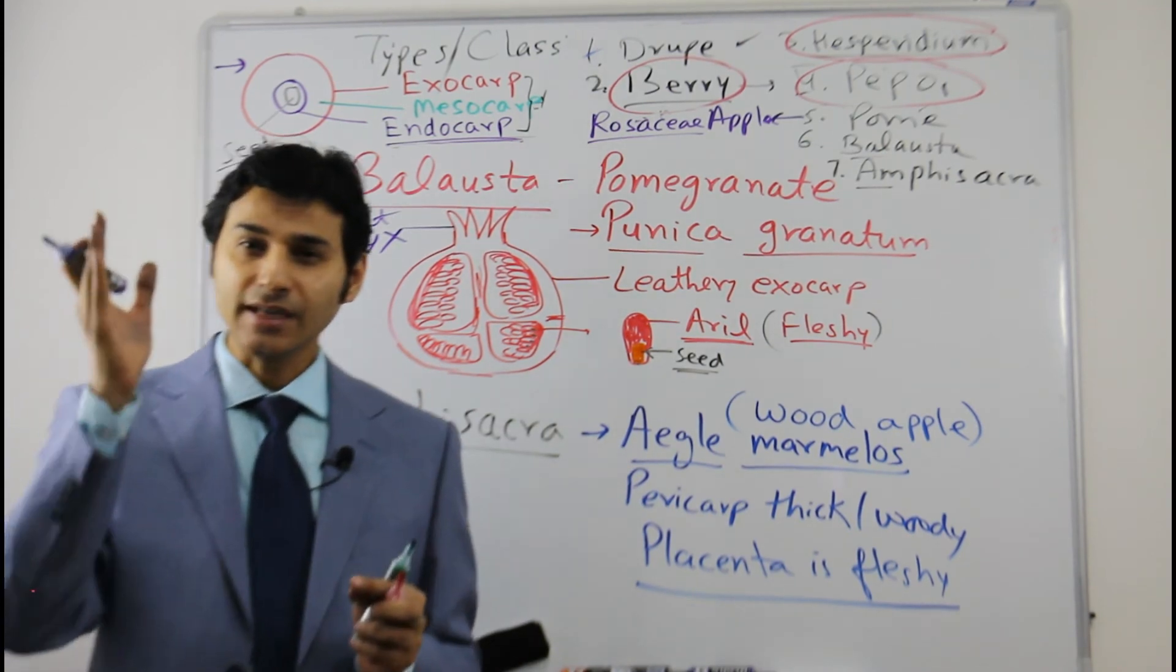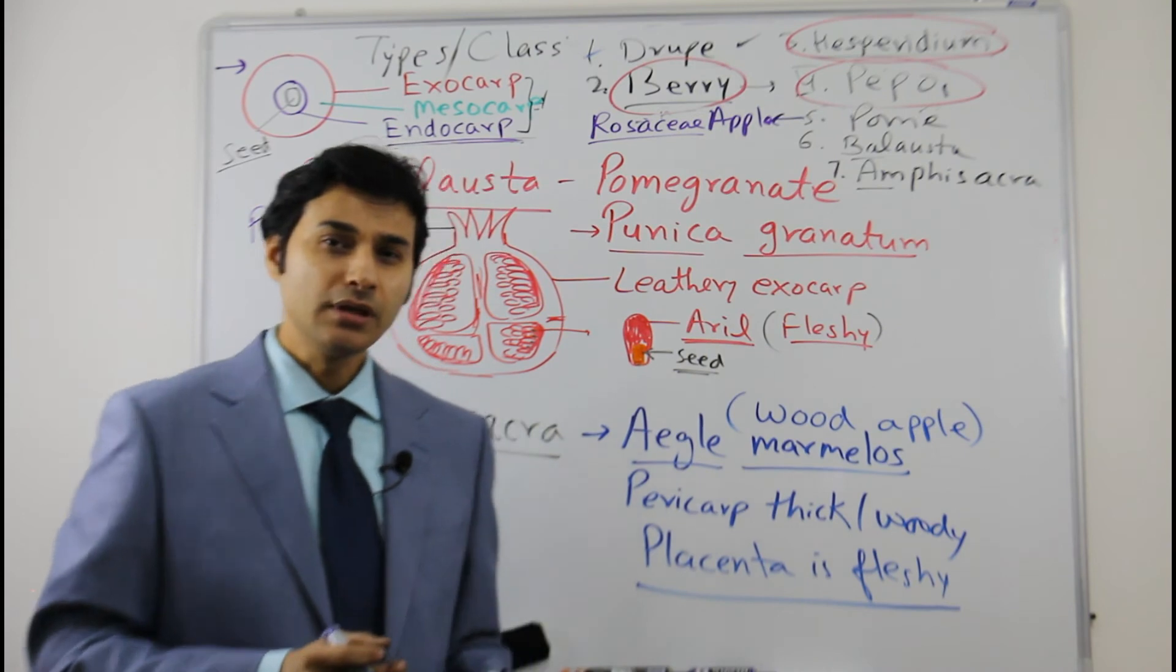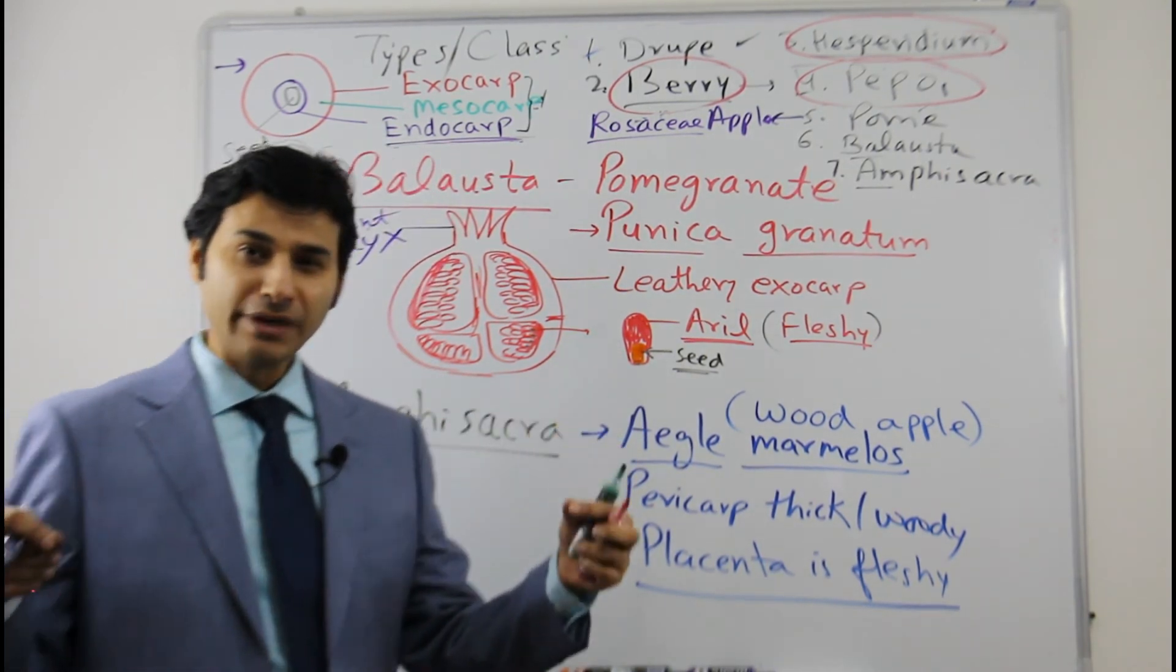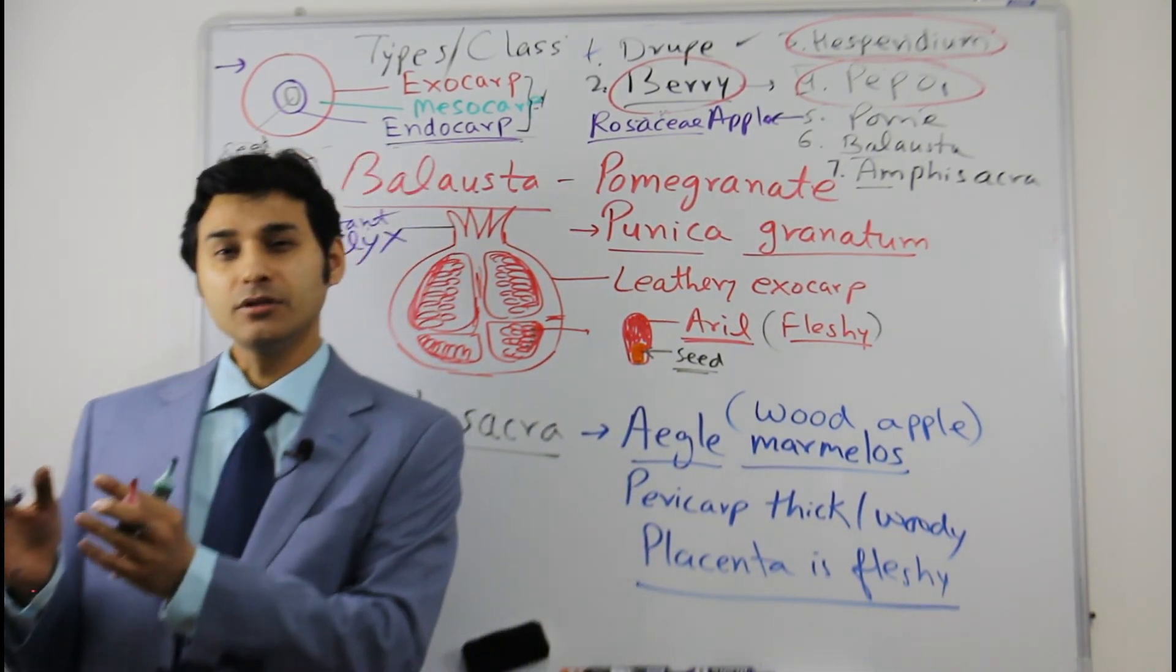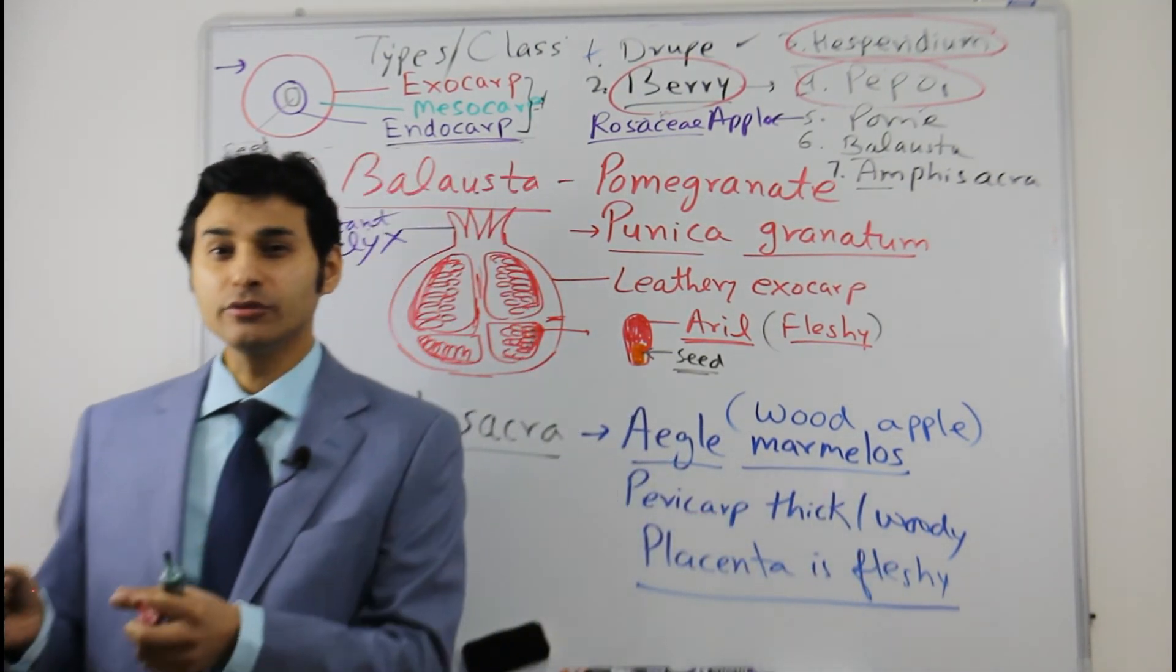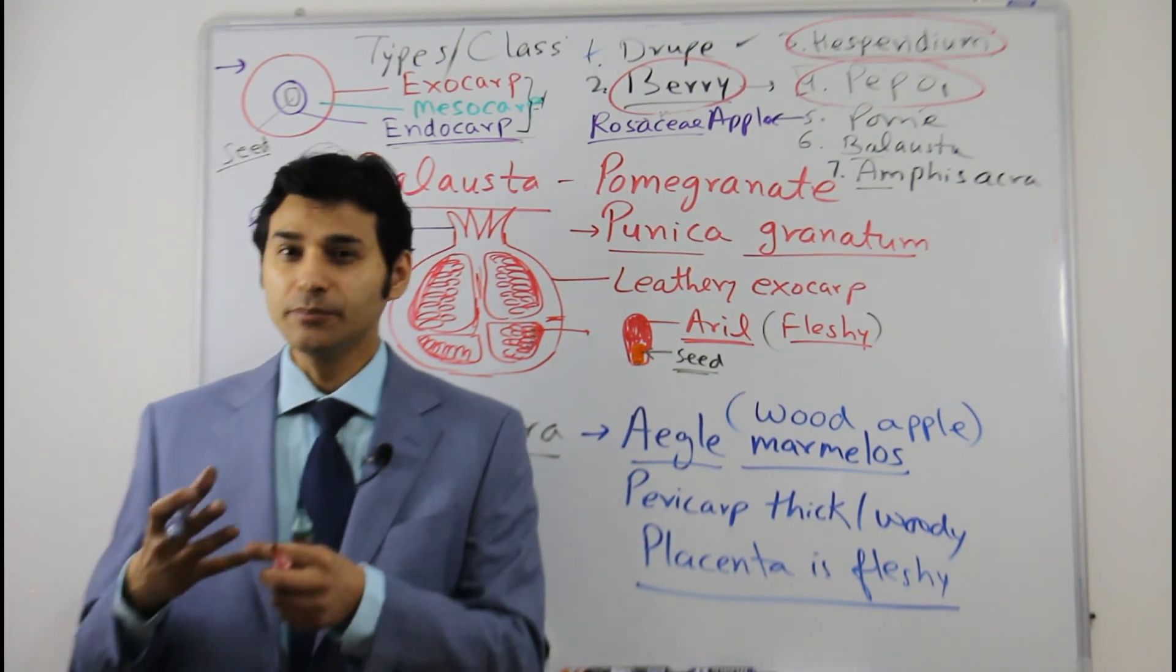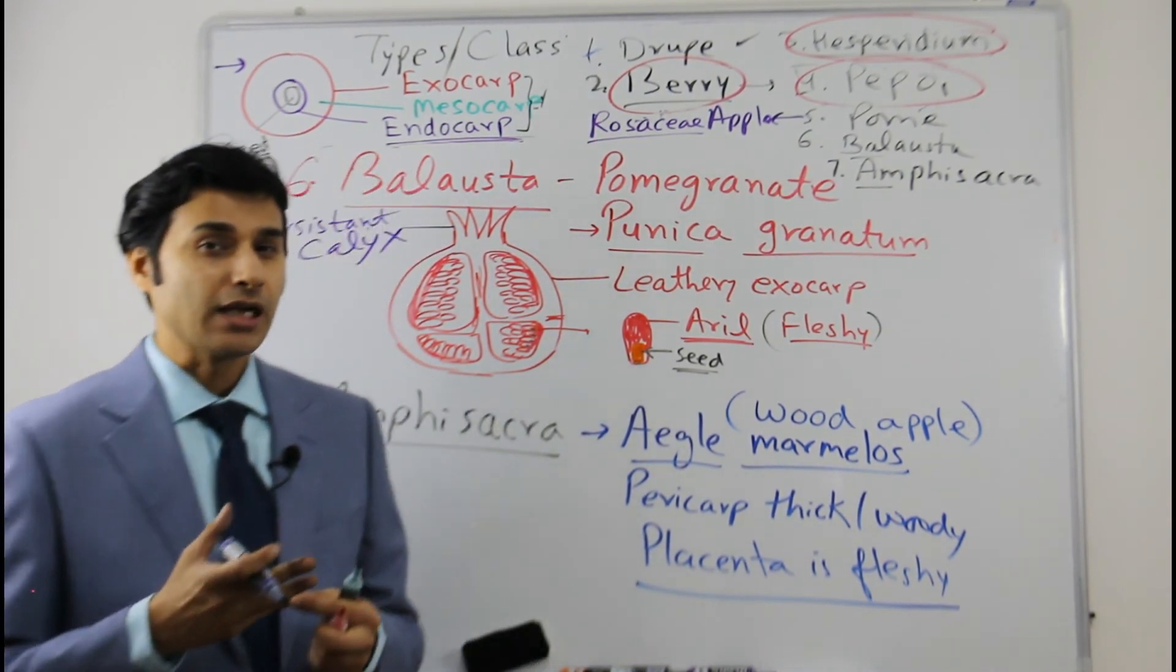As you remember, when we started the video, we said that the fruit is of three types: simple, aggregate, and multiple. The simple has two main types: simple juicy and simple dry. Simple juicy - the mesocarp is juicy, generally it is eaten like that, and simple juicy has different types.